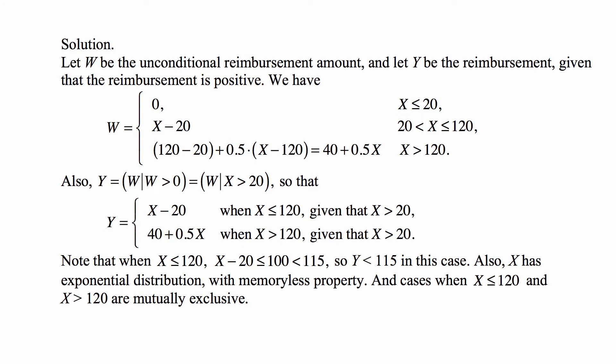Let w be the actual unconditional reimbursement amount and let y be the reimbursement given that the reimbursement is positive. Then w is 0 when x is less than or equal to 20, because of the deductible of 20. For x between 20 and 120, it's x minus 20, which is x after the deductible. The cost up to 120 is subject to a deductible of 20, so what's reimbursed is 120 minus 20. But anything above 120 is reimbursed only at 50%, and that's x minus 20 times 0.5.